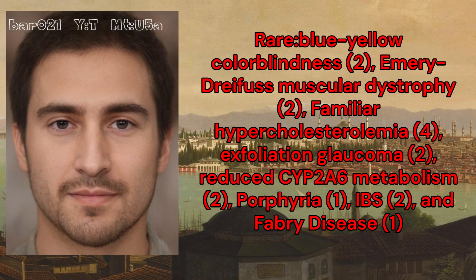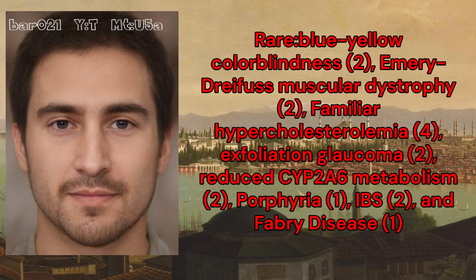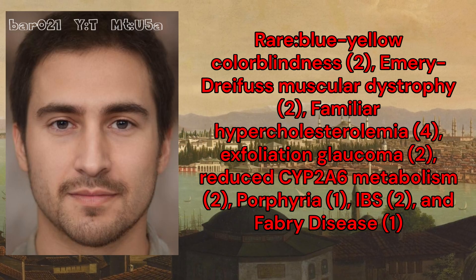He carried rare risk variants for blue-yellow colorblindness, Emery-Dreifuss muscular dystrophy, familial hypercholesterolemia, exfoliation glaucoma, reduced CYP2A6 metabolism, porphyria, IBS, and Fabry disease.